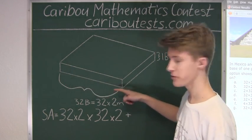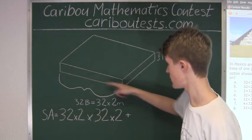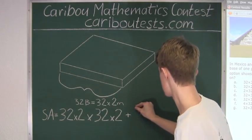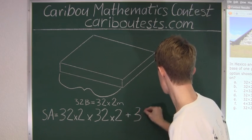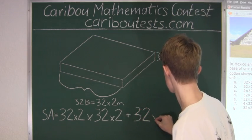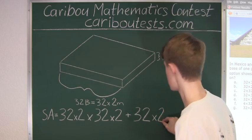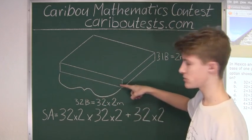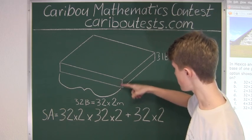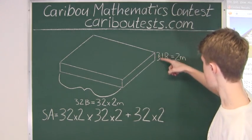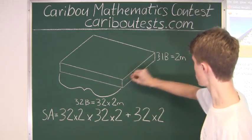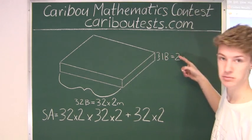So again we can just start off with the 32 times 2 because we know that length. So now we know that this is 32 times 2 but now we want to find the height. And we already know that that is one block.